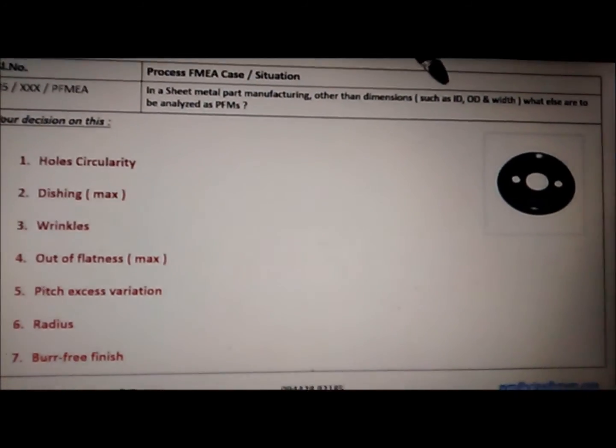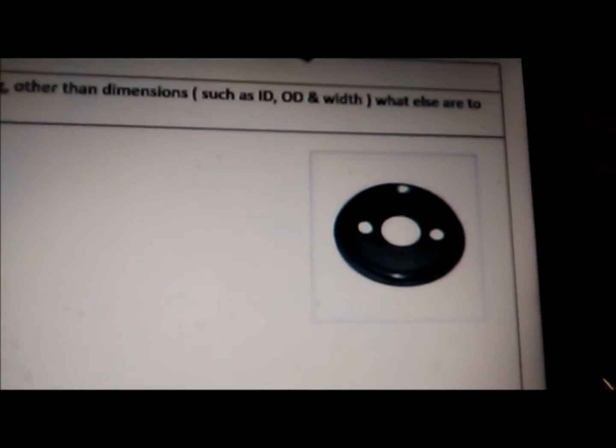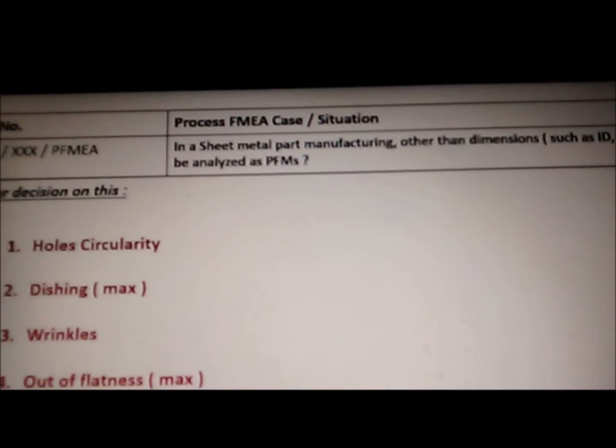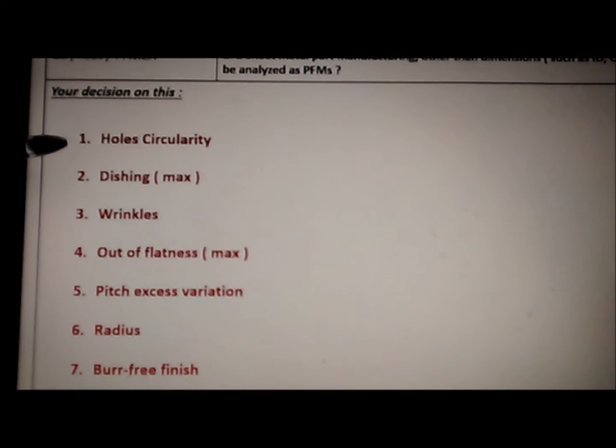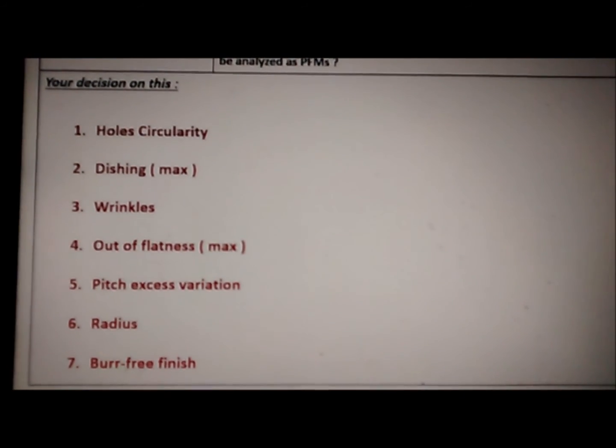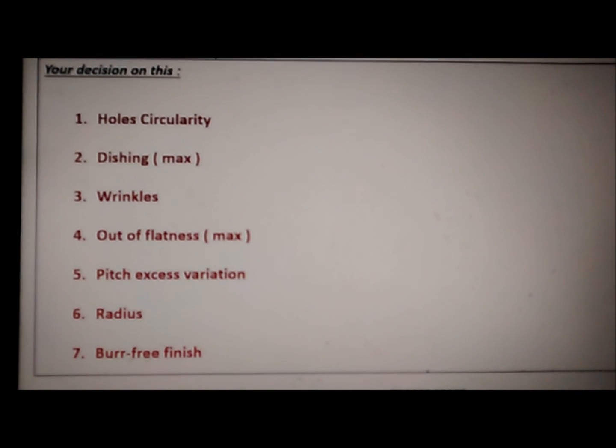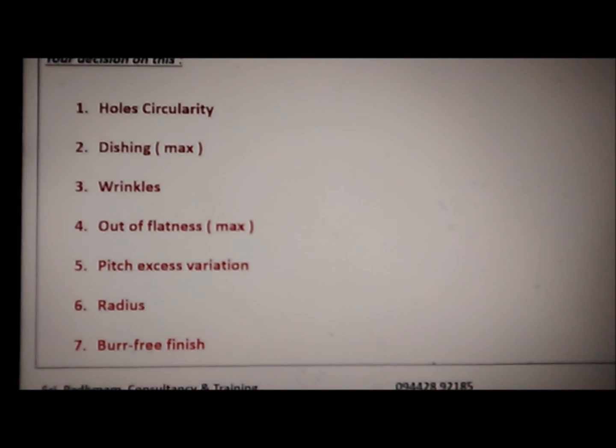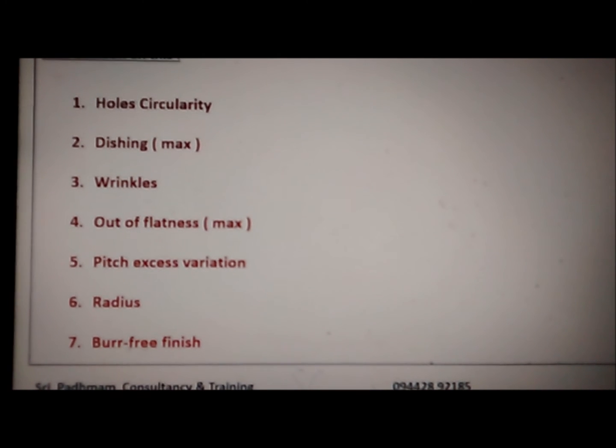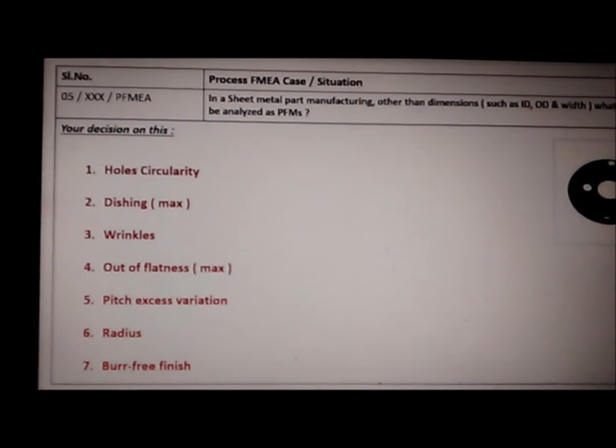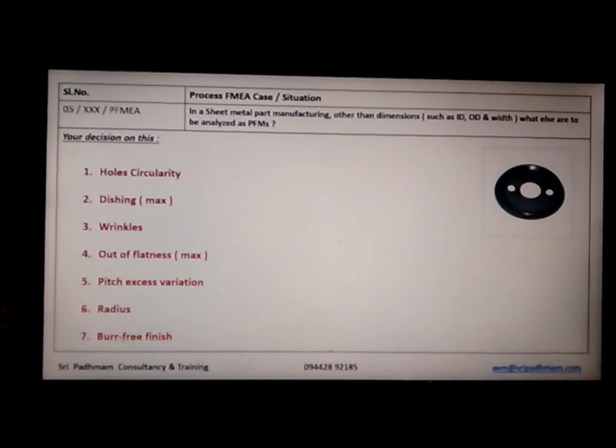So, over and above ID, OD, and width, the team has to consider other important parameters, seven excess parameters. All have to be considered and they have to be converted into suitable failure modes. This is how the power of FMEA should be properly understood.